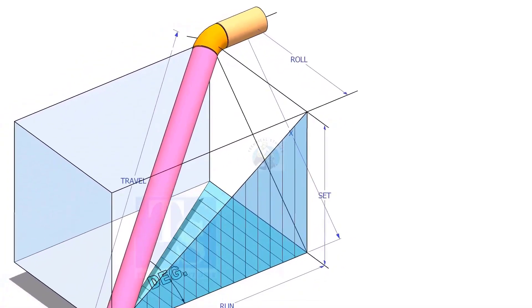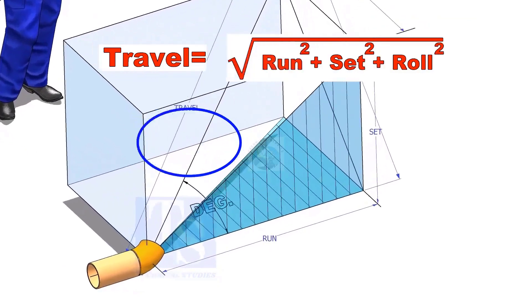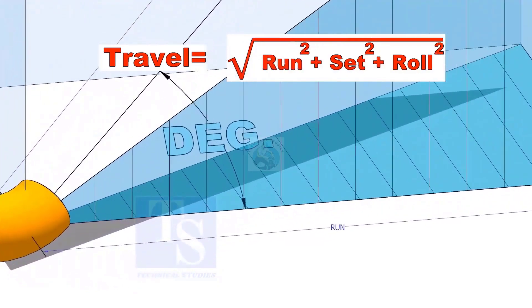The formula to calculate the travel length is root of the sum of the run, set and roll.